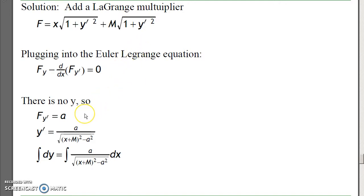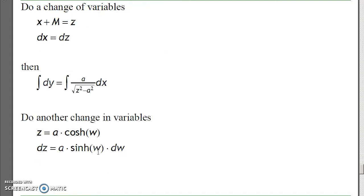Plug it into the Euler-Lagrange equations, and I get, since there's no y, Fy prime is a constant, meaning that y prime satisfies this equation. y prime is dy/dx, bring the dx right, and integrate both sides. y has to satisfy this integral.